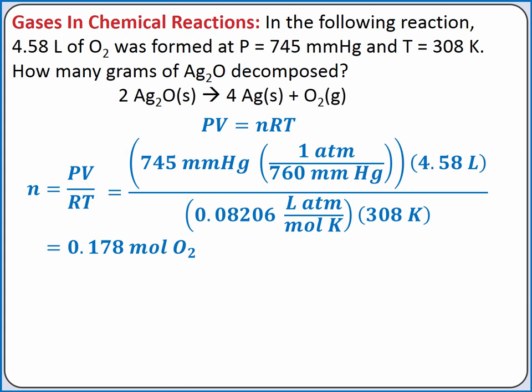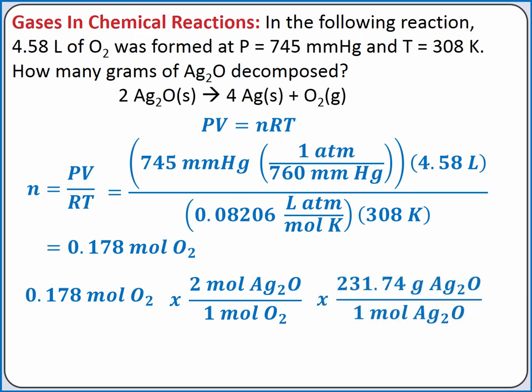Next, we'll use dimensional analysis to convert from moles of oxygen to grams of silver oxide. We can use the coefficients in the balanced chemical equation to convert from moles of oxygen to moles of silver oxide. And we can use the molar mass of silver oxide to convert from moles to grams.